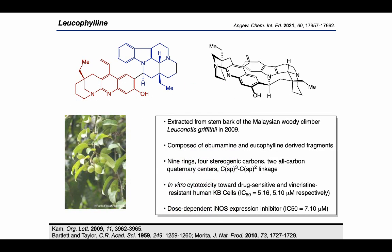Our natural product target, Leucofolidine, is a heterodimeric bisindole alkaloid first isolated from the bark of a Malaysian woody climber in 2009. This natural product is a union of two monomeric fragments: Ibernamonine, the indole-containing portion highlighted in blue, and Leucofoline, the quinoline-containing fragment highlighted in brown. Structurally, the molecule contains 9 rings and 4 stereogenic centers, two of which are all-carbon quaternary stereocenters. Leucofolidine also exhibits biological activities such as in vitro cytotoxicity toward drug-resistant human KB cells and inhibition of nitric oxide synthesis.